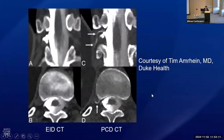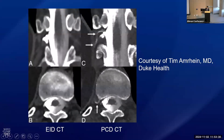Here's another example from a colleague. This was a patient who initially had a very good quality EID CT myelogram and they didn't see a CSF venous fistula, so they repeated the exam on photon counting CT. You can see the same diverticulum filling up, but on the photon counting CT there's also a very thin vein filling up with contrast, making the diagnosis of a CSF venous fistula.